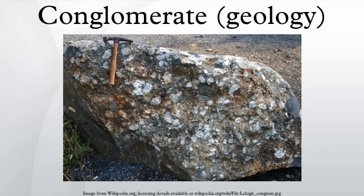Conglomerates deposited in fluvial environments are typically well rounded and well sorted. Clasts of this size are carried as bedload and only at times of high flow rate. The maximum clast size decreases as the clasts are transported further due to attrition, so conglomerates are more characteristic of immature river systems. In the sediments deposited by mature rivers, conglomerates are generally confined to the basal part of a channel fill where they are known as pebble lags. Conglomerates deposited in a fluvial environment often have an A-B plane type imbrication.